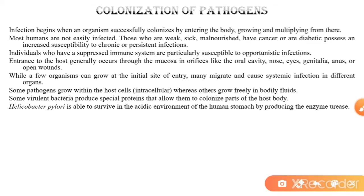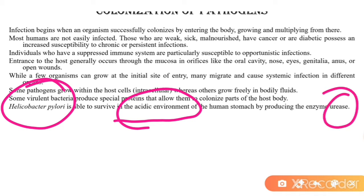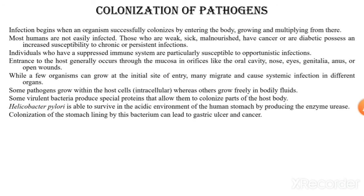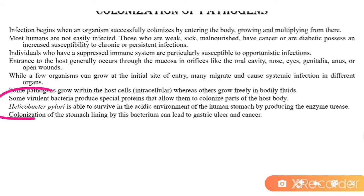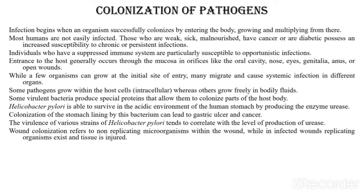The human stomach is highly acidic due to HCl and acidic enzymes. In this acidic environment, the bacterium Helicobacter pylori will grow and cause disease. Colonization of the stomach lining by this bacterium can lead to gastric ulcer and cancer. The virulence of various strains of Helicobacter pylori tends to correlate with the level of production of urease.